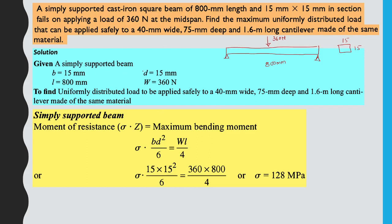For the simply supported beam, moment of resistance = σ·Z = maximum bending moment. Using Z = BD²/6 for rectangular section and M = WL/4: σ × (15 × 15²/6) = 360 × 800/4. Solving, the stress σ = 128 N/mm².